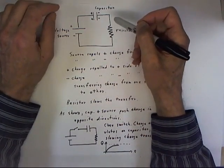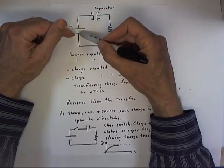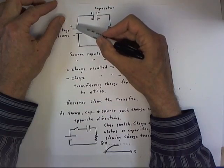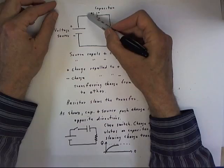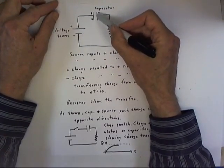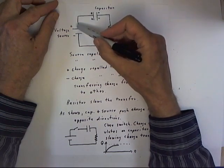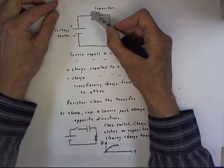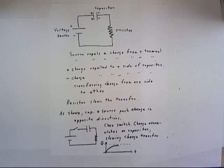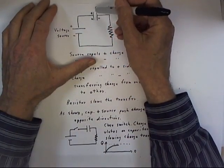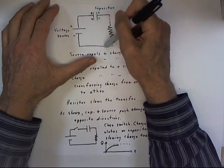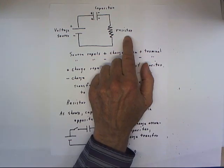So in this circuit, if the negative terminal repels negative charges, that would tend to move negative charges onto this part of the capacitor. And if the positive side repels positive charges, it will tend to deposit positive charges on this side of the capacitor. You can think of the source as pulling positive charges off of this end and pushing them onto this end, or alternatively pulling negative charges from this side and depositing them on this side. The net effect is to move charges so that this side builds positive charge and this side builds negative charge. The resistor has the effect of slowing the process.